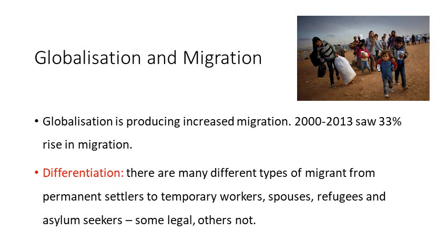We need to engage in what we call differentiation, as there are many different types of migrants. These range from permanent settlers — people looking to make a permanent move — to temporary workers, who move to a different country for a couple of months or even a couple of years for a particular job. Someone who moves abroad may also eventually want to bring a spouse and family across. We also have refugees — people fleeing persecution, famine, or civil war — and asylum seekers as well.